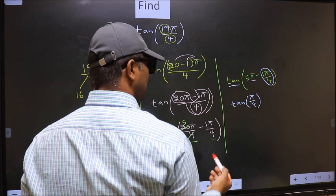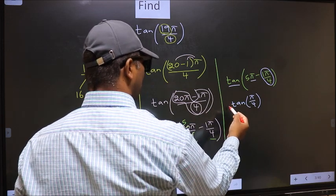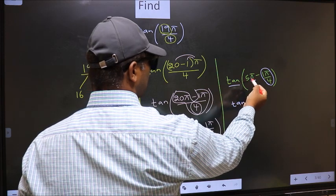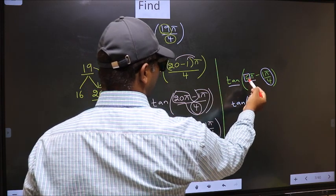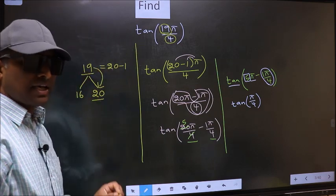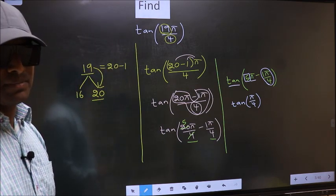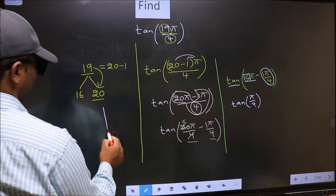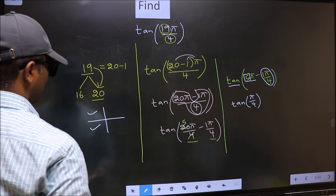Now the question is, will we get here plus or minus? To answer that, you should look at the number before pi, which is 5. And 5 is odd. And all the odd multiples of pi lie in either the second or the third quadrant.